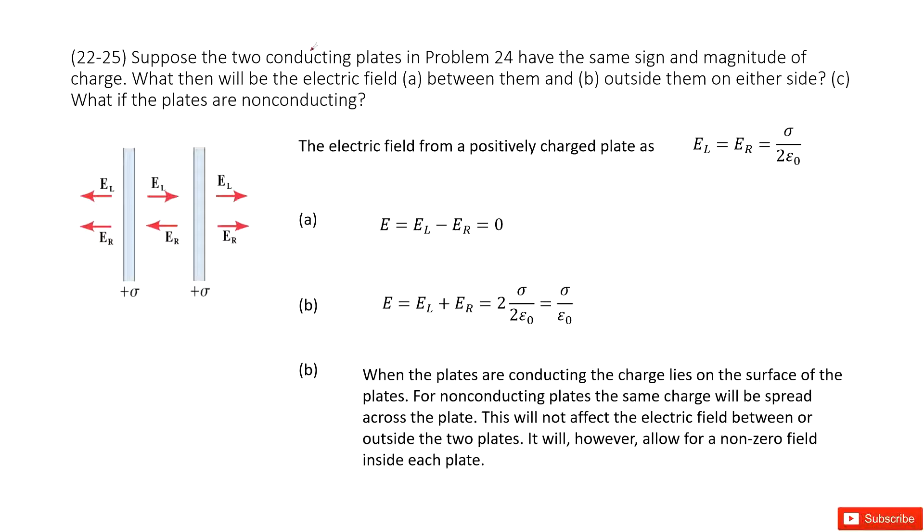In this case, we have two conducting plates with the same size. The charges have the same magnitude, so the charge density is positive σ.